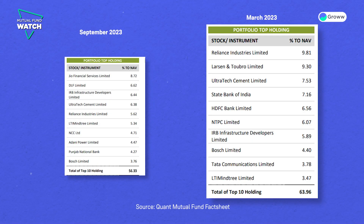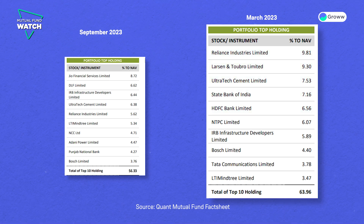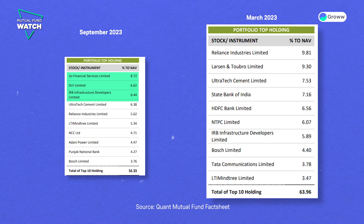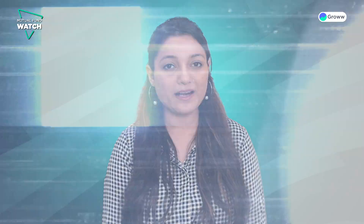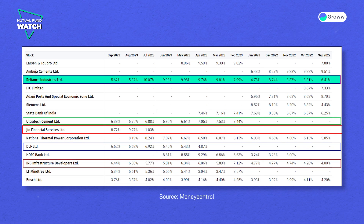If we check March 2023, the fund's top 5 portfolio holdings were not the same. This fund's high portfolio turnover ratio is evident from these changes. Jio Financial Services Ltd., DLF Ltd. and IRB Infrastructure Developers Ltd. were not in the top 5 holdings in March 2023. If we look at Reliance Industries Ltd., the fund has reduced its holdings — it was 6.41% in September 2022 and reduced to 5.62% in September 2023.